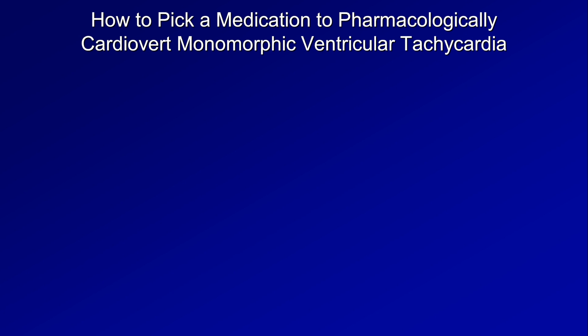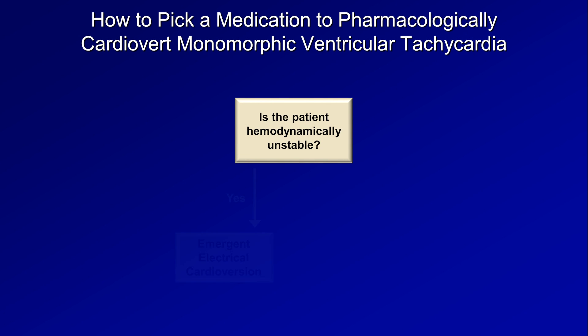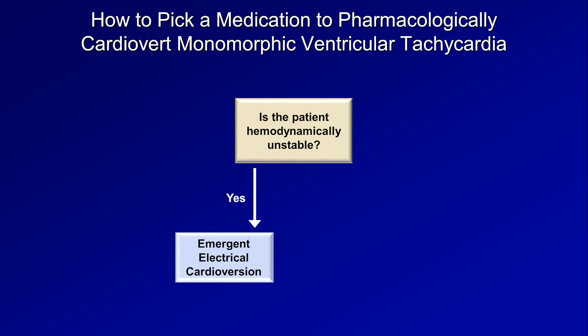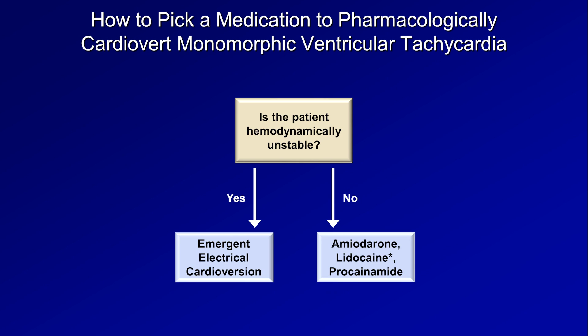Moving away from AFib and AFlutter, let's talk VT. How do you pick a med to pharmacologically cardiovert monomorphic VT? As with AFib, if the patient is unstable, electrically cardiovert them immediately. If they are stable, amiodarone, lidocaine, and procainamide are all options. Lidocaine in particular is generally used only in situations of VT in the setting of acute coronary ischemia. And even with hemodynamically stable VT, electrical cardioversion is absolutely still an option, but one that carries the downside of requiring anesthesia and sedation.